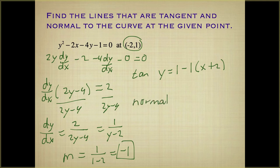The normal line. y equals our y-coordinate. The opposite reciprocal of negative 1 is positive 1, x plus 2. There are my tangent and normal lines.